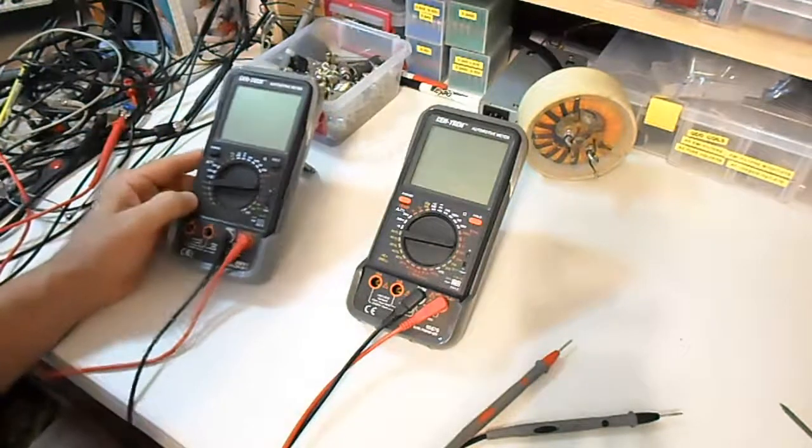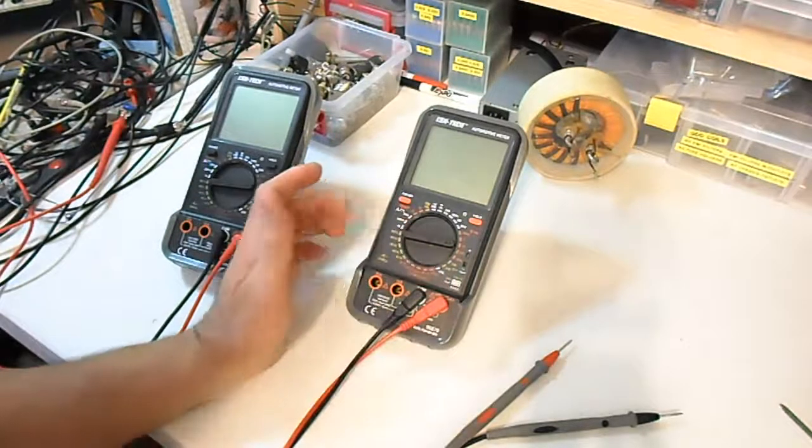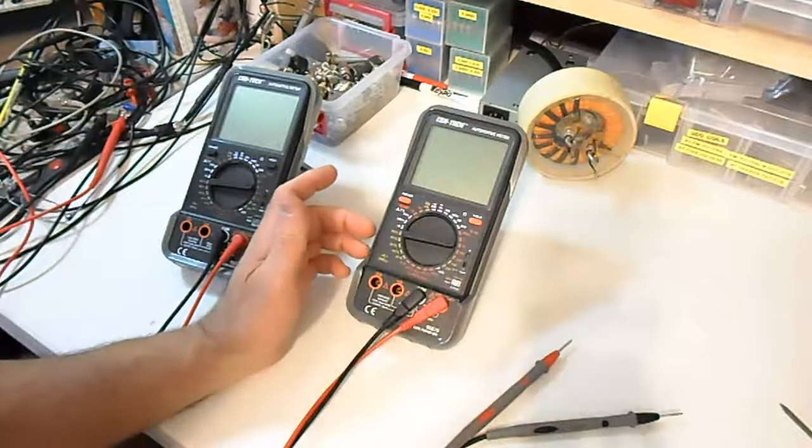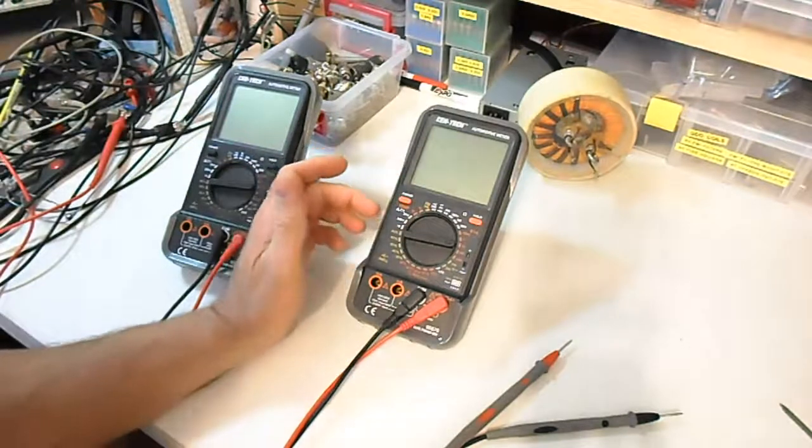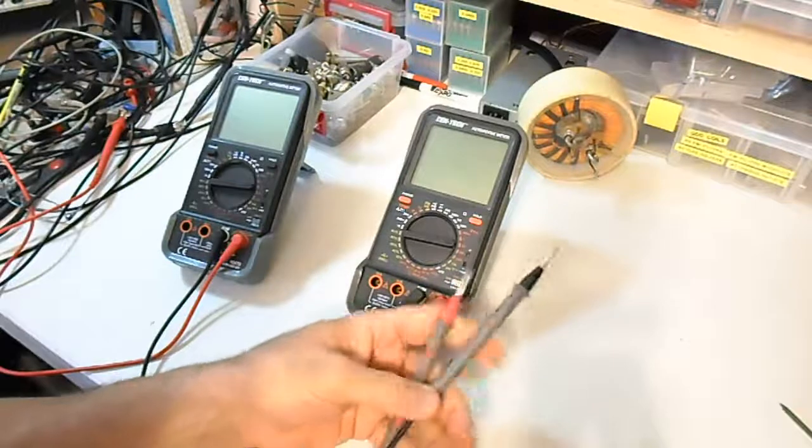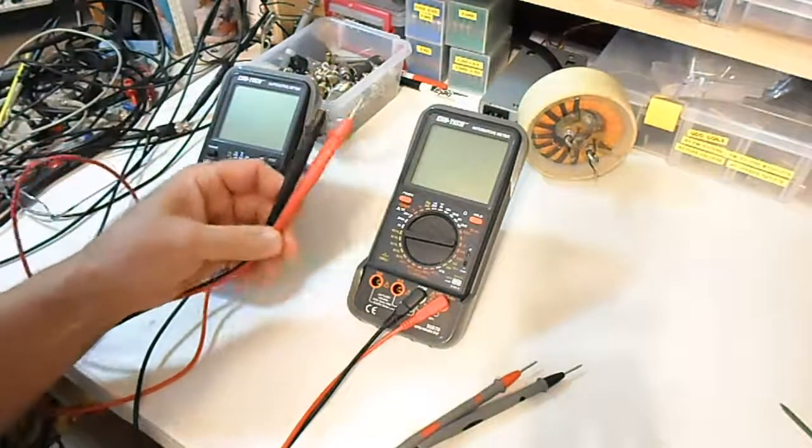It has, like a lot of them do now, for testing the HFE of the gain of transistors. You can do that with this one. Has this input here for a thermocouple, which comes with the unit as well. The probes, these aren't the original probes. These are CAT3 probes, but the ones that come with it are CAT2 probes, and they're a thousand volt, 10 amp.